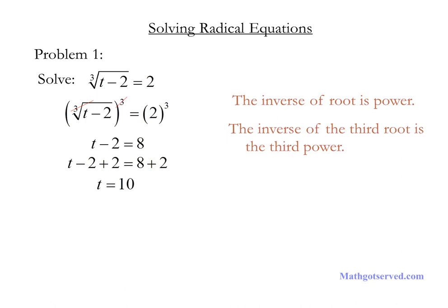We can do a quick mental check to verify the accuracy of our result. If you plug in 10 for t, you have 10 minus 2 which is 8, and the cube root of 8 is 2 because 2 times 2 times 2 is 8. So we are confident that our answer is correct. Now let's take a look at the next question.